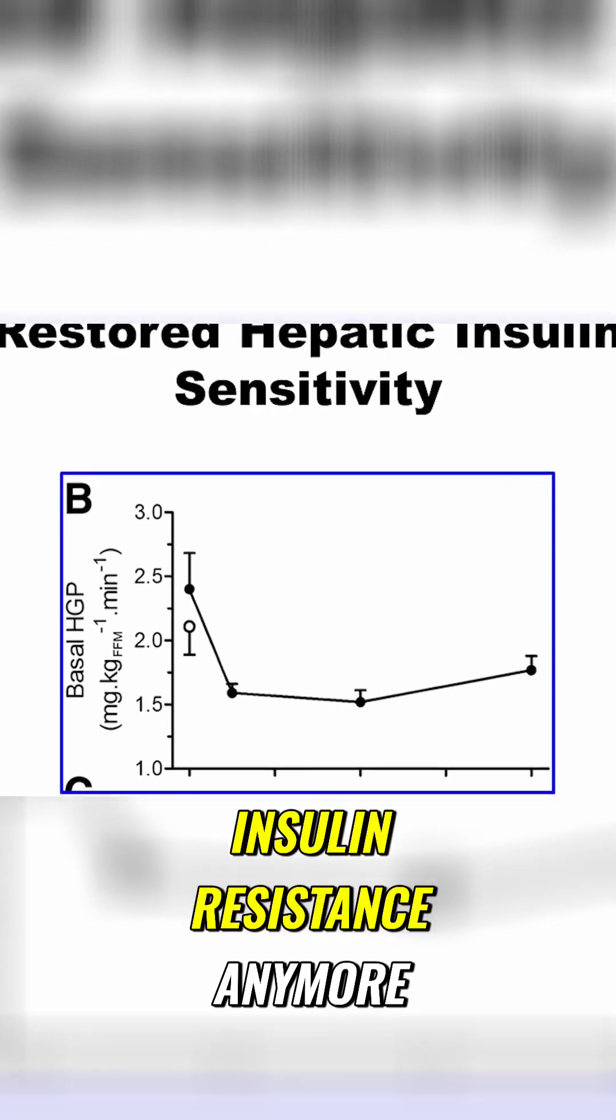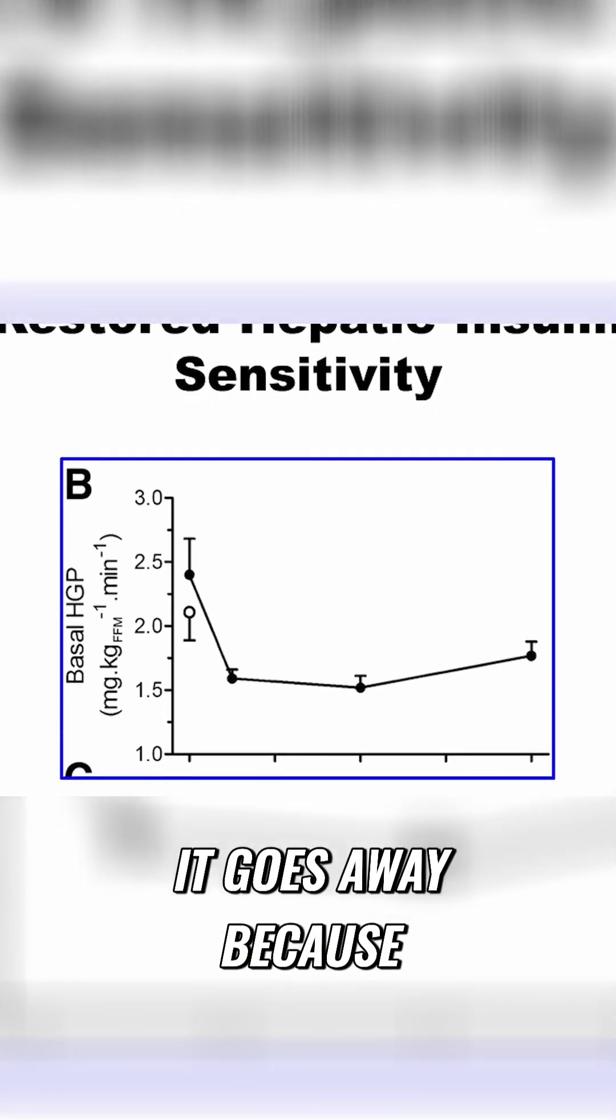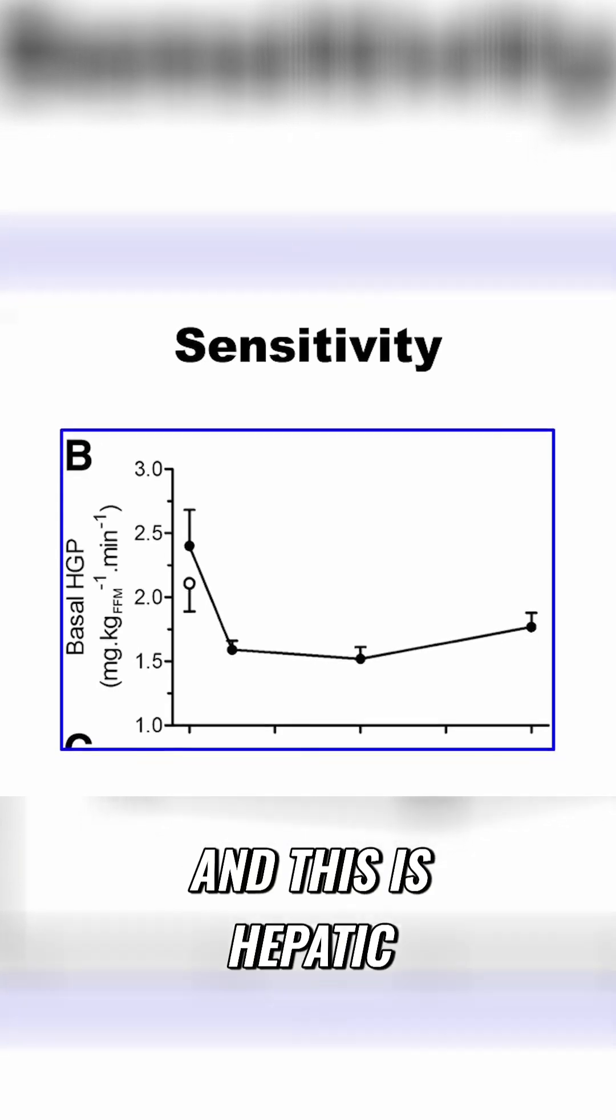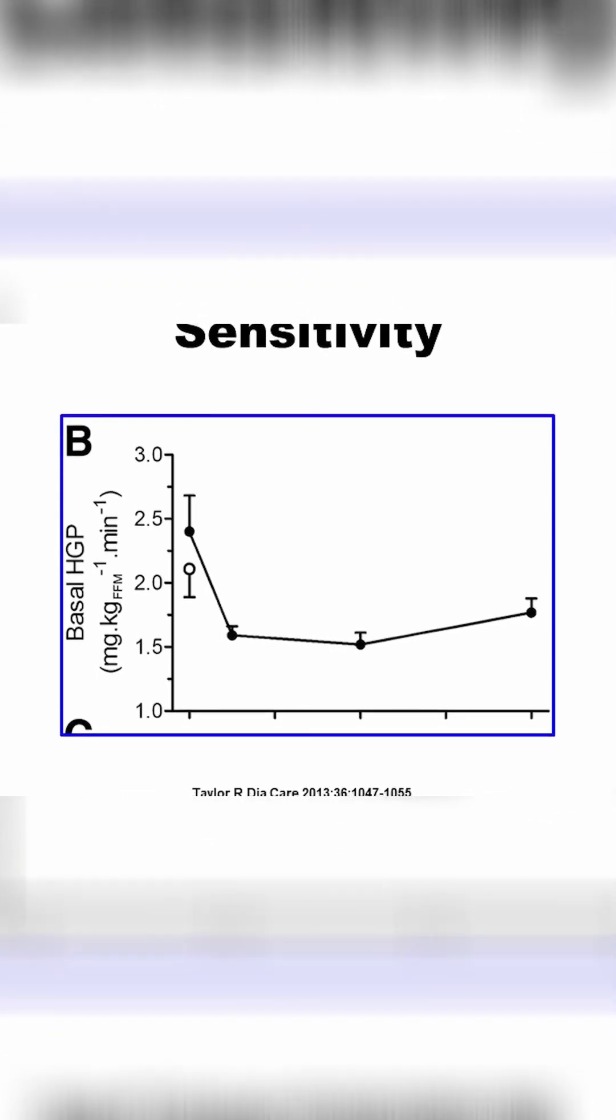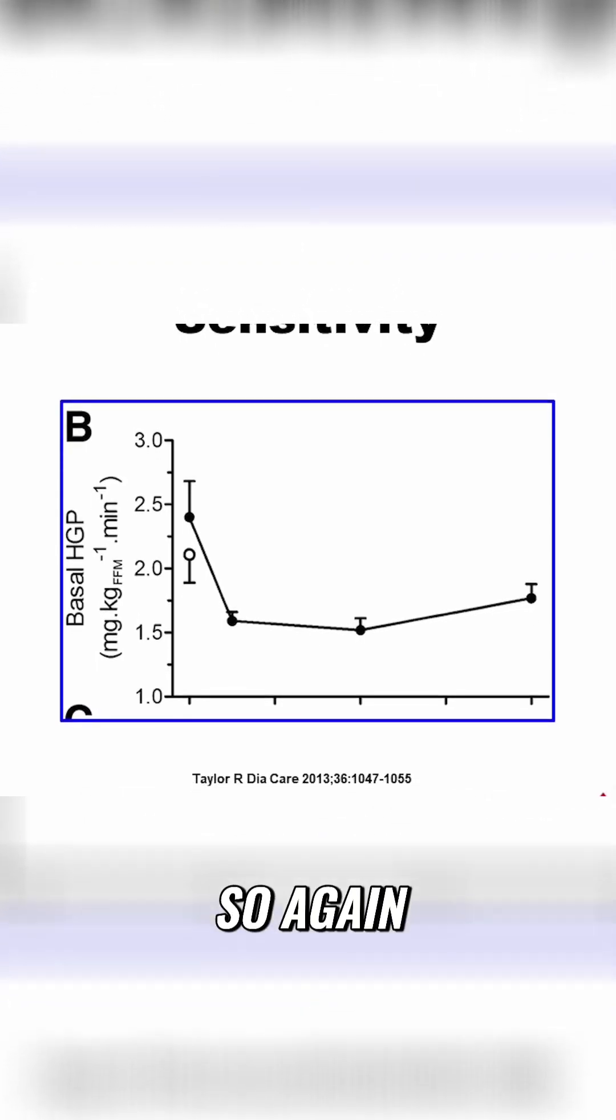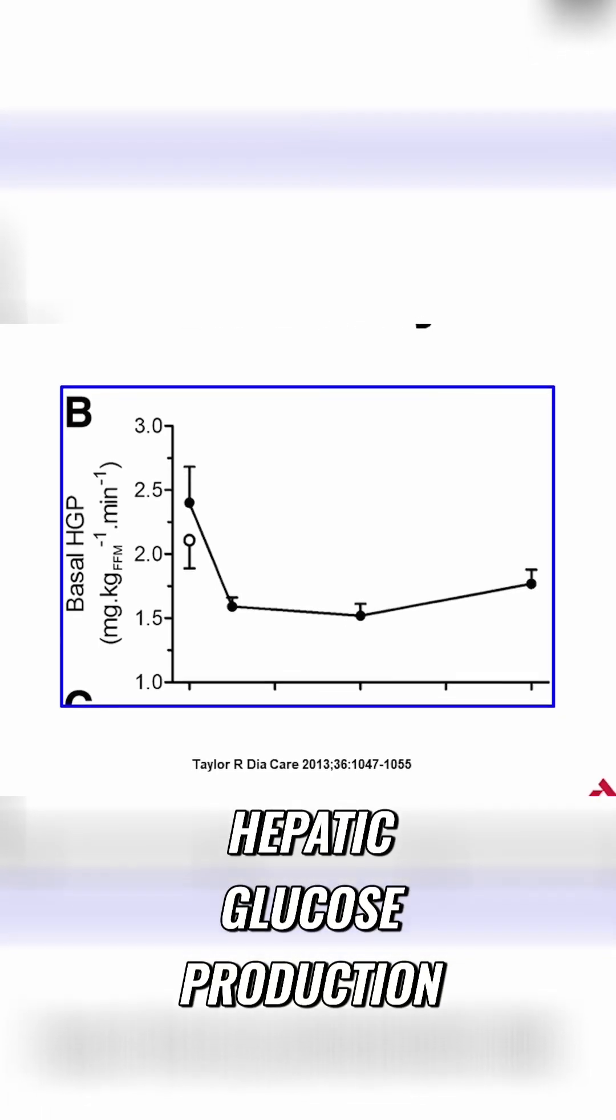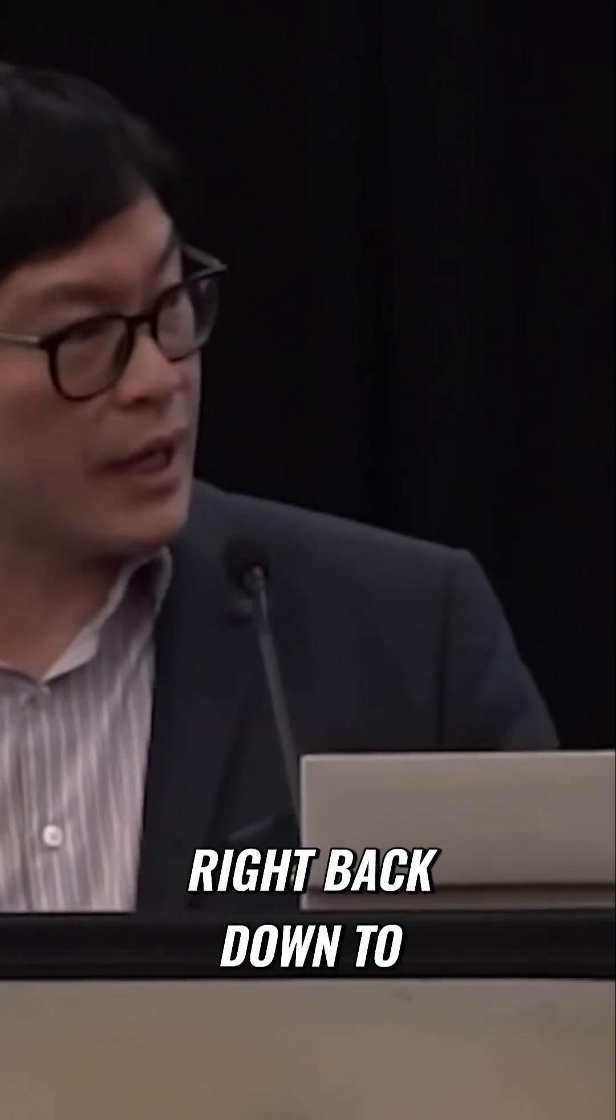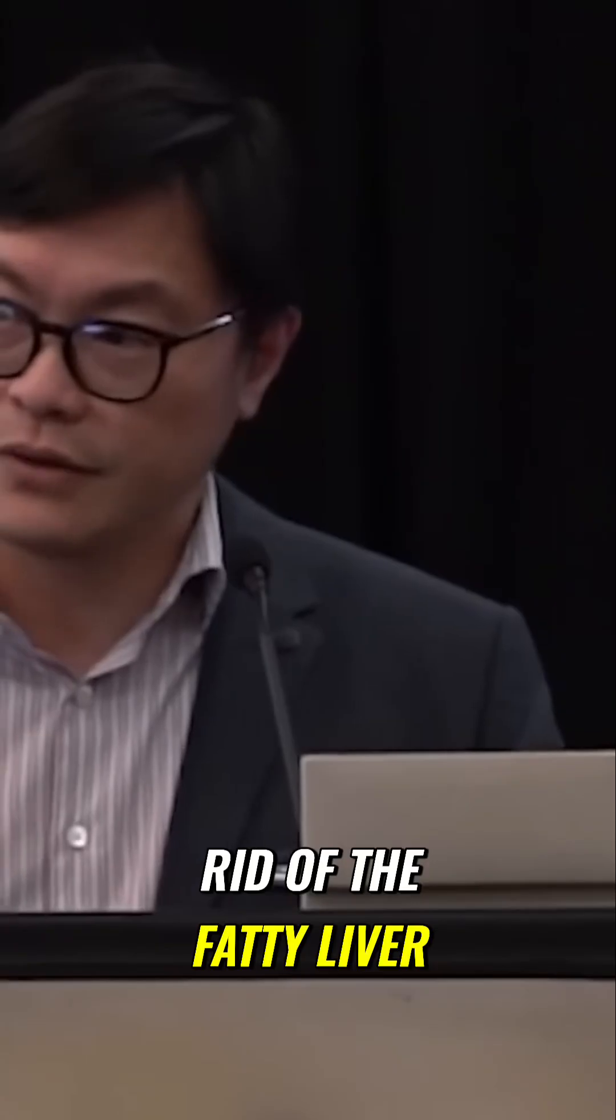You don't see the insulin resistance anymore. It goes away because you unloaded that cell. And this is hepatic glucose production. This is baseline, so you're getting too much hepatic glucose production. That's the whole problem with insulin resistance. It goes away, so insulin sensitivity goes right back down to normal when you get rid of the fatty liver.